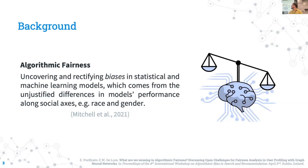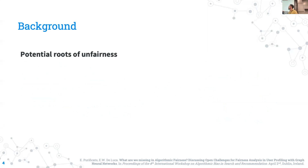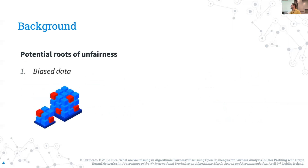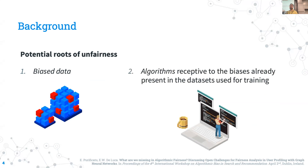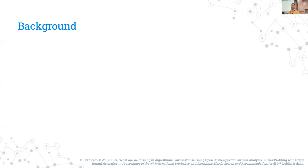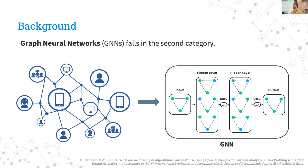Existing works try to uncover potential roots of unfairness. One category is biased data, and the second one can be algorithms that are receptive to the biases already present in the dataset used for training. In this work, we are taking a specific kind of technology — graph neural networks — that fall in this second category.